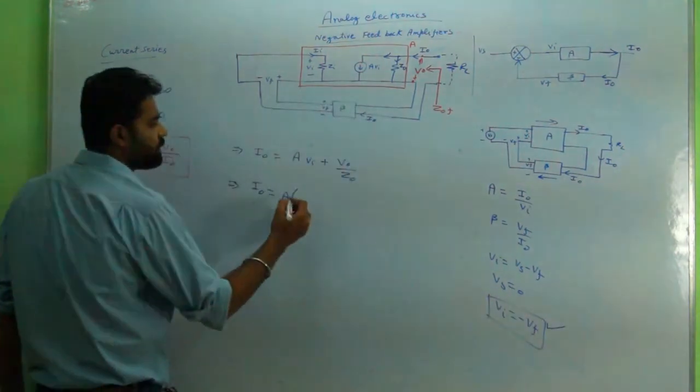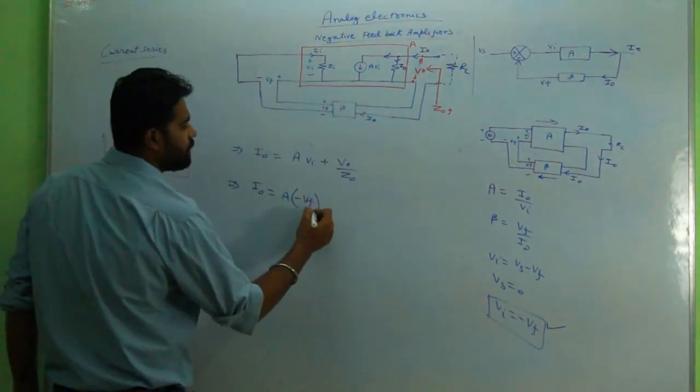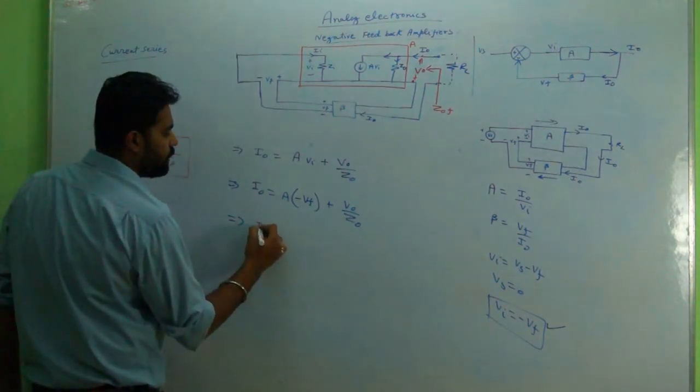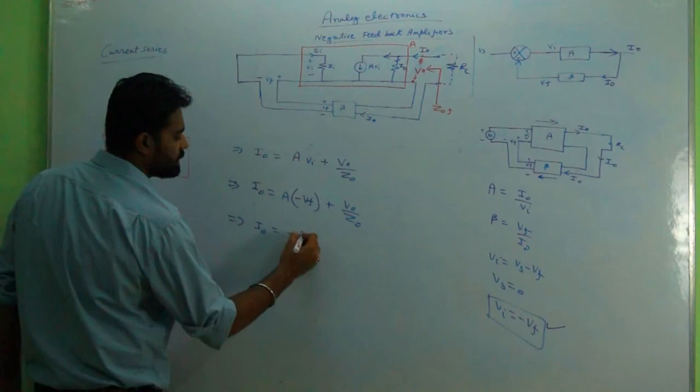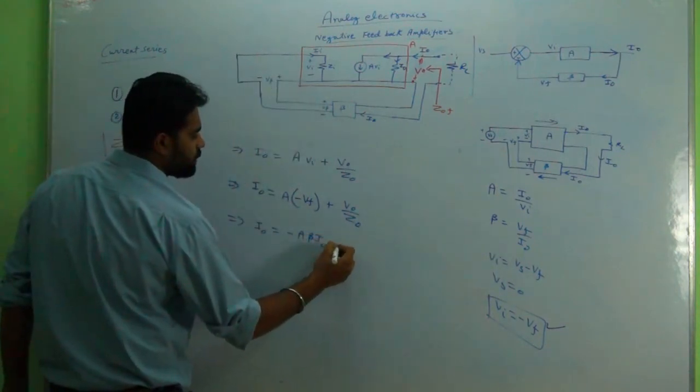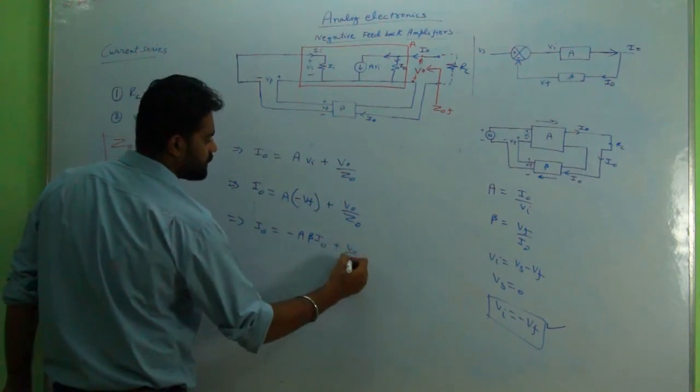v_i, if V_s is equal to zero, then v_i equals minus v_f. So it is minus v_f plus v_naught upon Z_naught. So i_naught equals minus A v_f. Now v_f can be written as beta into i_naught plus v_naught upon Z_naught.